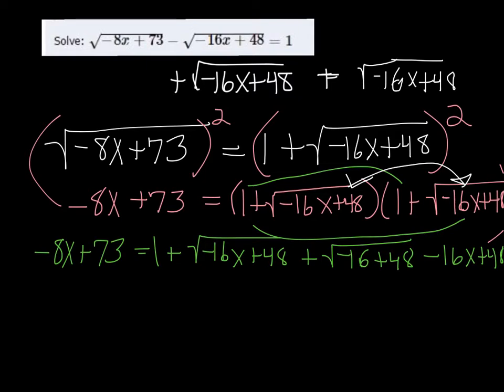Since we have like terms here in the middle, then we have two of them. So it's like you can imagine a 1 in front and 1 plus 1 is 2. So we get 2 times the square root of negative 16x plus 48.